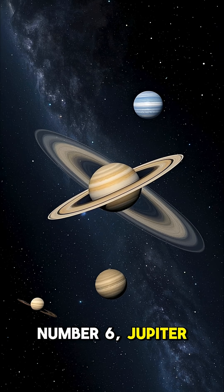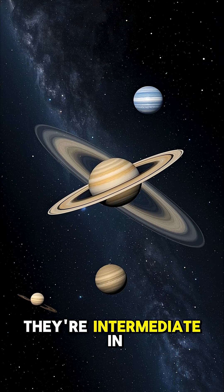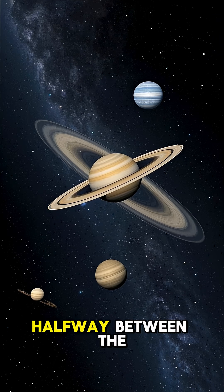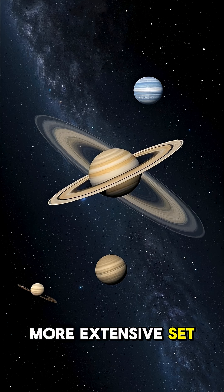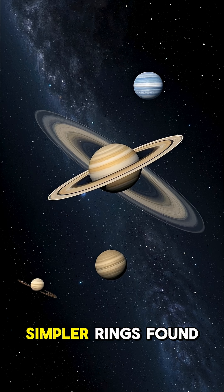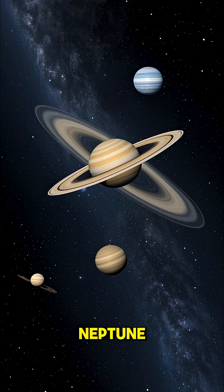Number six, Jupiter has rings. They're intermediate in complexity, halfway between the more extensive set around Saturn and the simpler rings found around Mars and Neptune.